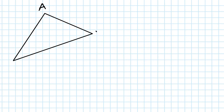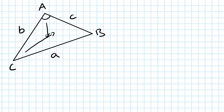Let's name this triangle A, B, C. Now, opposite angle A is lowercase a. Opposite angle C is lowercase c. And opposite angle B is lowercase b.